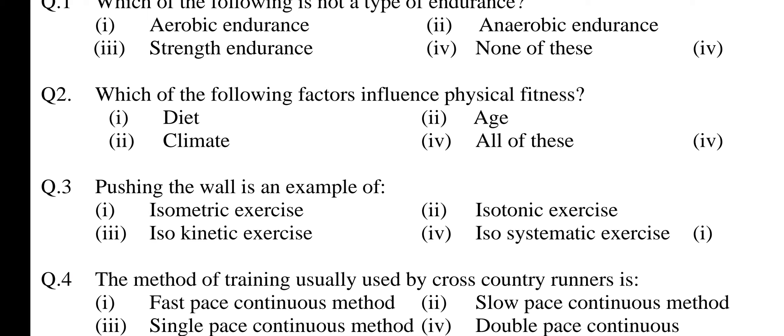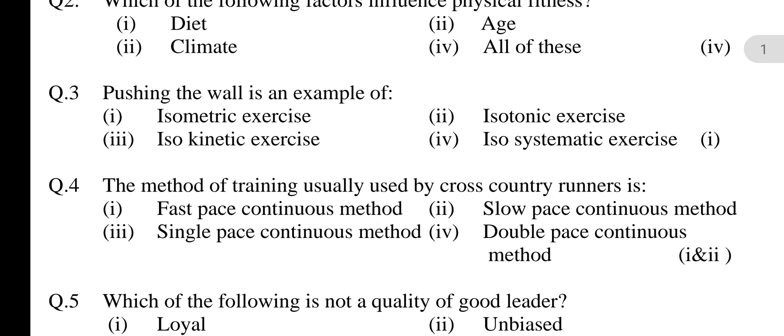Question 2: Which of the following factors influence physical fitness? Option 1: Diet, 2: Age, 3: Climate, 4: All of these. Answer is option 4 — all of these. Question 3: Pushing the ball is an example of — option 1: Isometric exercise, 2: Isotonic exercise, 3: Isokinetic exercise, 4: Isosystematic exercise. Answer is option 1 — isometric exercise.